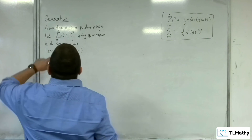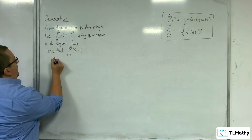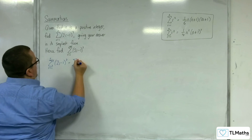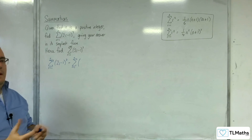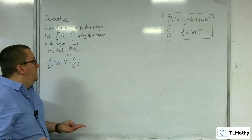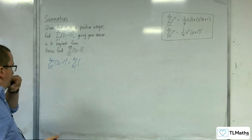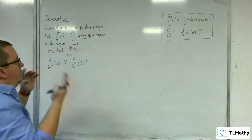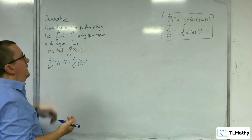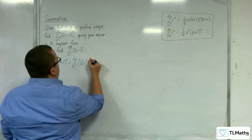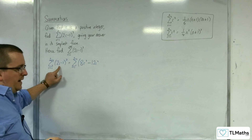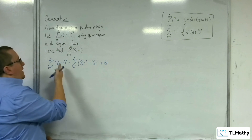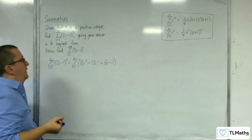The first thing we need to do is expand those brackets out. The summation of (2r minus 1) cubed from r equals 1 to n. We can either expand progressively or use binomial expansion — I'm going to use binomial expansion. So we get 2r all cubed, which is 8r cubed. Then 3 times (2r)² times (minus 1), giving minus 12r squared. Then 3 times 2r times (minus 1)², giving plus 6r. And then (minus 1)³, so minus 1.